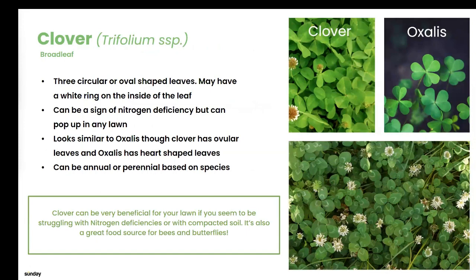Clover is actually one of my favorite weeds because it can be beneficial to your lawn. It usually spreads in lawns that don't have as much nitrogen, because clover uses its roots in a symbiotic relationship with fungi to create its own nitrogen. If you're having nitrogen issues and your lawn is turning a little light yellow, consider leaving it — it can help your lawn with extra nitrogen. Birds, bees, and butterflies love it, and you'll get a little show from the pom-pom-like flowers. It looks similar to oxalis, which is another broadleaf weed, but oxalis doesn't have those beneficial nitrogen-fixing characteristics. Both can be treated with Dandelion Doom if you decide they don't fit your lawn.